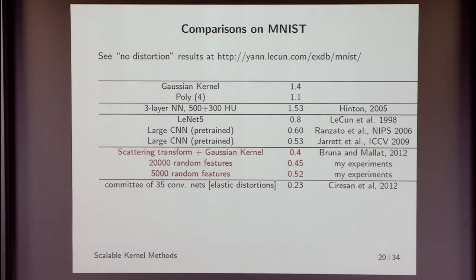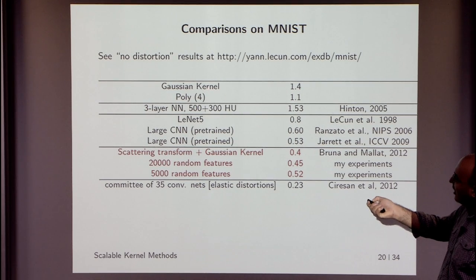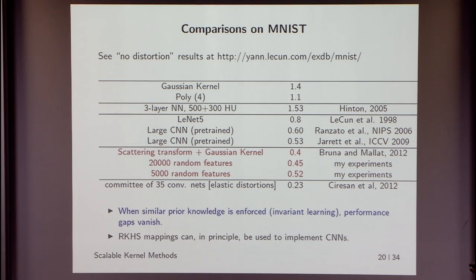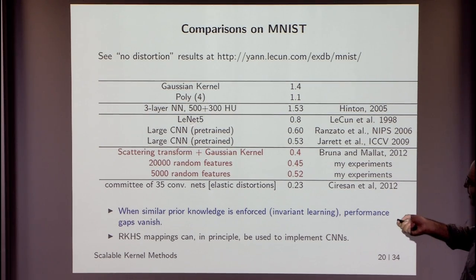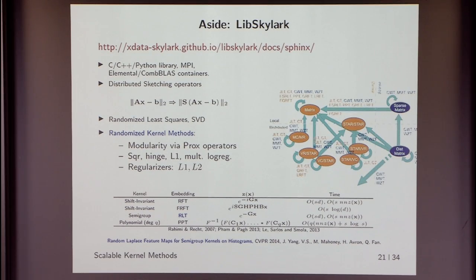On MNIST, convolutional neural nets perform extremely well, while a Gaussian kernel not incorporating any invariances does not do as well. But once you use a representation of images that is somewhat deformation-invariant, you narrow this gap considerably. The main point: when similar prior knowledge is enforced in either framework, performance gaps vanish. And if you want to train CNNs, you can use RKHS or kernel-based ideas there as well.